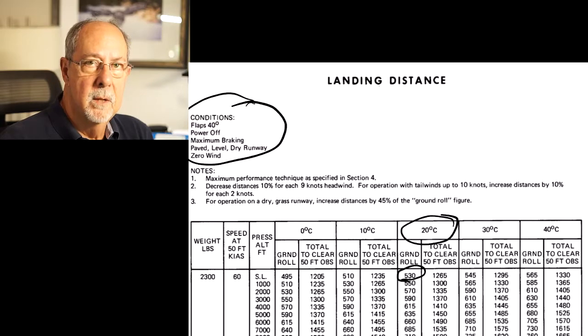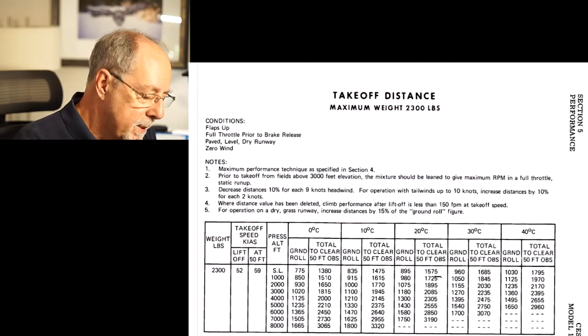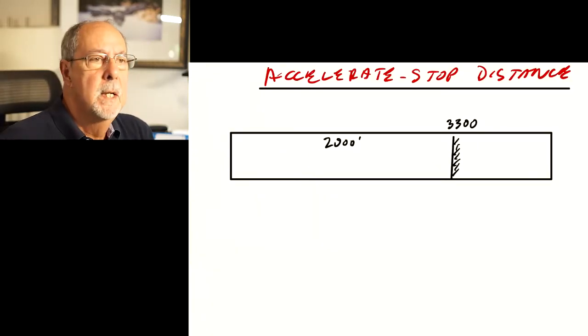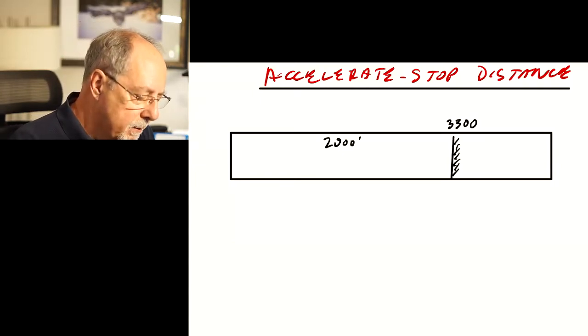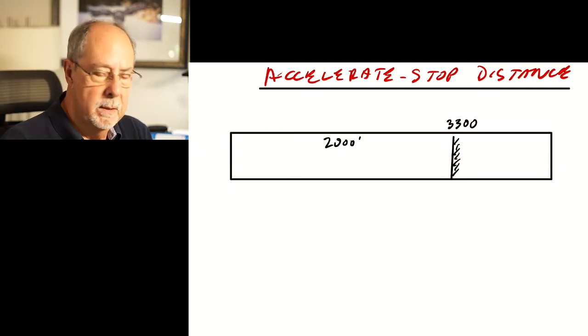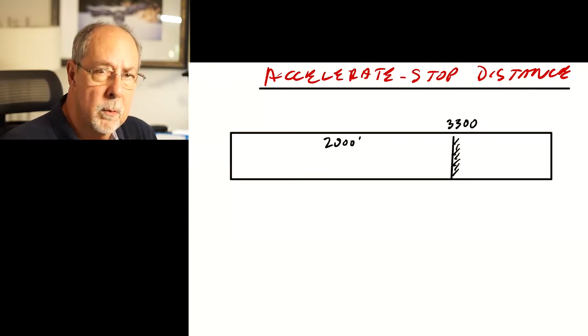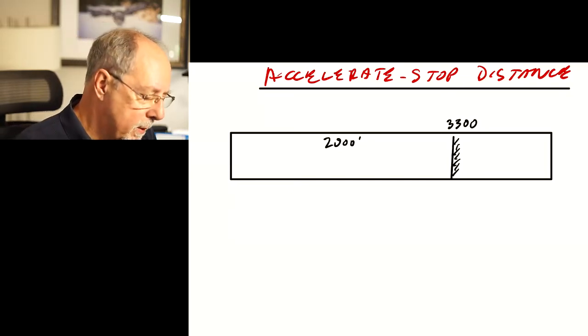So this is where the accelerate stop distance comes into place. So here's an example for today for us. As it turns out, we are having some construction done on our runway, and there is about 1,000 feet cut off. So we have about 2,000 feet left to be operational. Is that enough to do a normal takeoff? Should we be using a short field takeoff? So let's explore that.